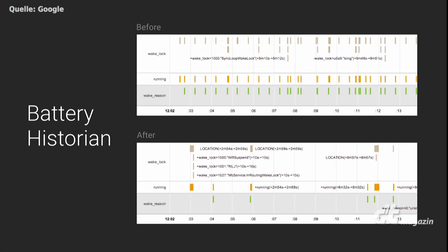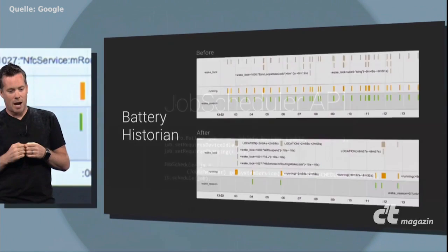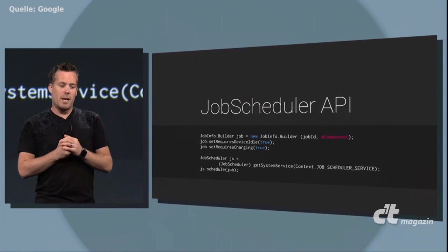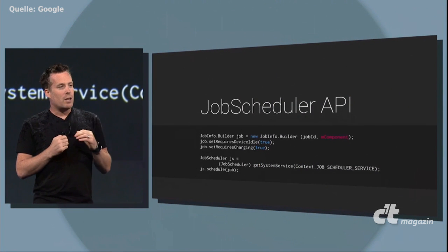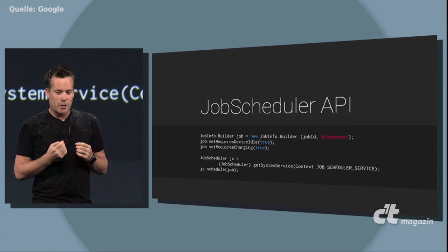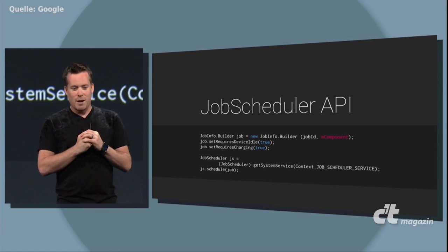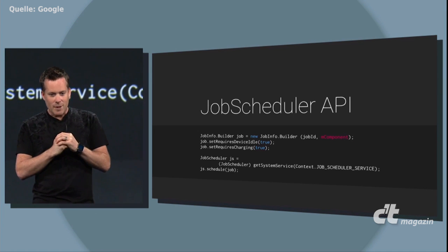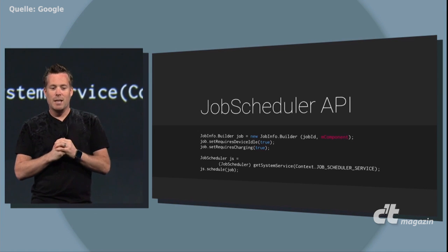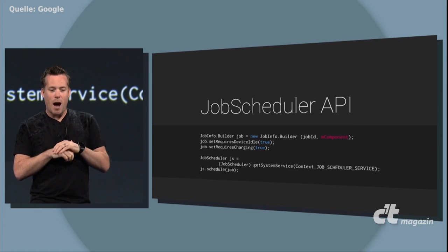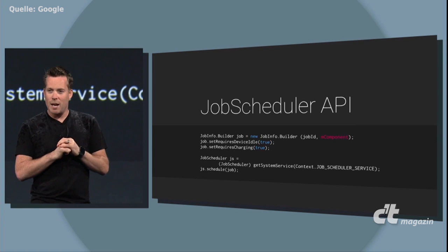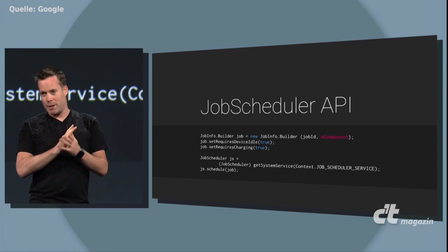We've also added a new Job Schedule API to help you optimize power consumption in your apps. Using the Job Schedule API, you can make your application more efficient by allowing the platform to coalesce non-urgent network requests from multiple apps. As a result, the platform can keep the radio asleep a higher percentage of the time, thus saving significant power.